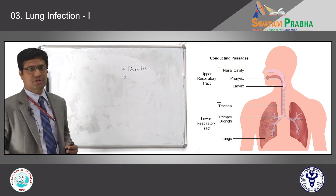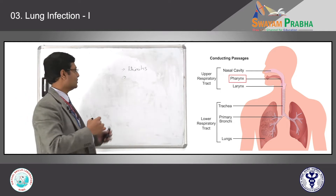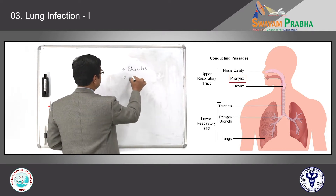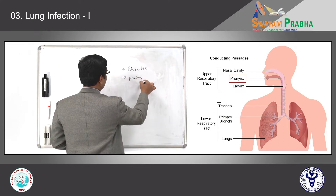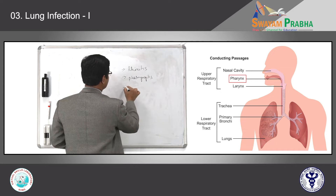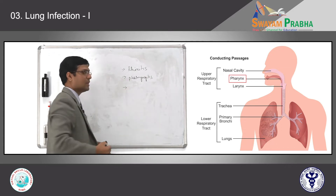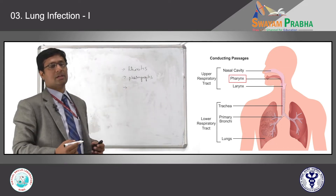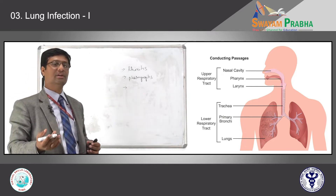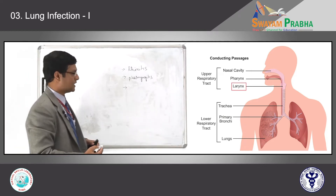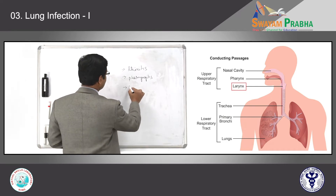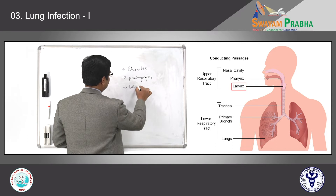If the inflammation occurs in the pharynx, which is present just below the nose, we call it pharyngitis. The last component of the upper respiratory tract, or the beginning of the lower respiratory tract, is the larynx. If there is infection or inflammation of the larynx, we call it laryngitis.